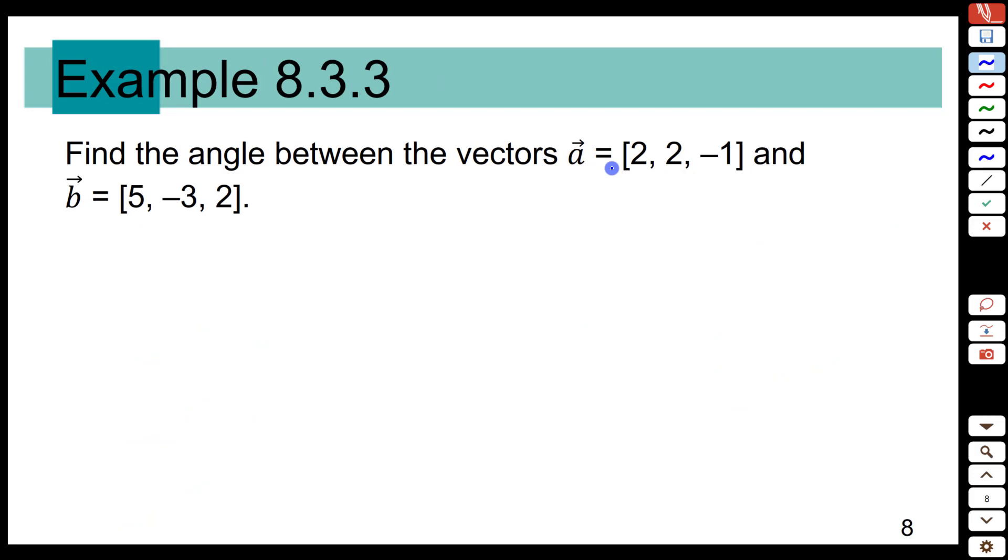By combining the two forms of our dot product, we can calculate things like the angle between two vectors. And especially in 3D, that can be a challenging thing to do in any other way. So what we know is that we can take the dot product with component form, and the component form of the dot product here is 2 times 5 plus 2 times negative 3 plus negative 1 times 2. And we calculate that out as 10 minus 6 minus 2 or 2.